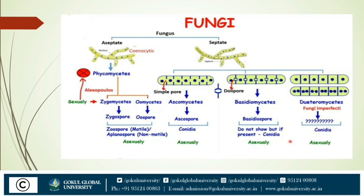Further, fungi were classified by Alexopoulos on the basis of sexual reproduction. Aseptate is classified into two types under sexual reproduction: zygomycetes and oomycetes. The sexual spore of zygomycetes is zygospore, whereas the sexual spore of oomycetes is oospore. Alexopoulos named the spores of septate as ascospore and basidiospore, but no spore forms in fungi imperfecti. So any fungi which does not have a sexual spore is classified into deuteromycetes.